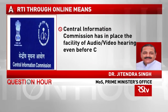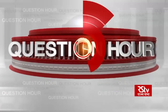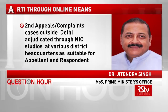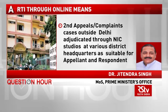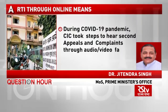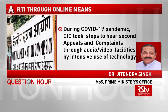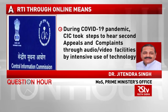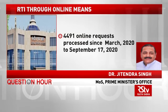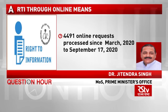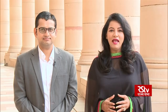Further, the Central Information Commission has had the facility of audio and video hearings even before the COVID-19 pandemic, and all second appeals or complaint cases outside Delhi have been adjudicated through NIC studios at various district headquarters in various states. During the COVID-19 pandemic, the Central Information Commission has taken steps to facilitate hearings of second appeals and complaints through audio and video facilities by intensive use of technology. As far as the Central Information Commission is concerned, a total of 4,491 online requests have been processed from March 2020 to 17th September 2020.